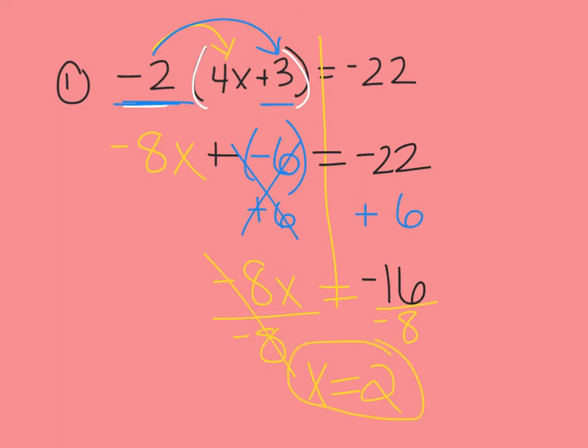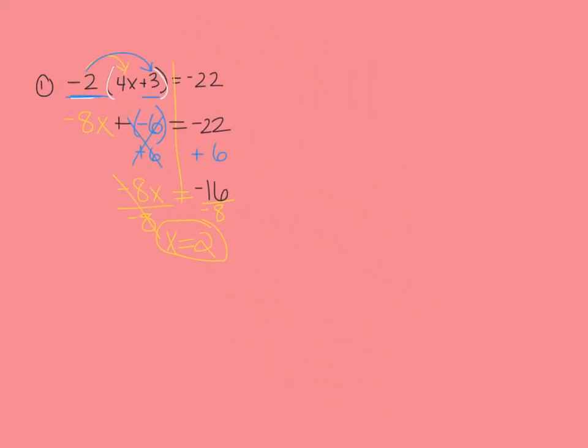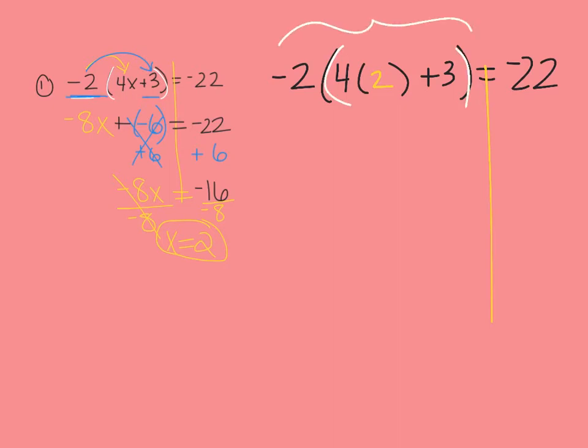You can go back in and check your solution by substituting 2 into your original equation. So I have 4 times 2 within my parentheses here. I always start by rewriting my original equation, and then we're going to use the order of operations this time to simplify the left side and see if it equals negative 22. Starting in parentheses, I've got multiplication and addition.